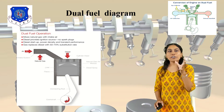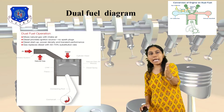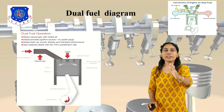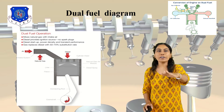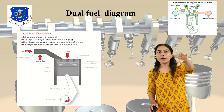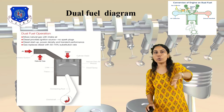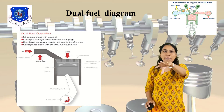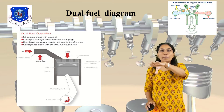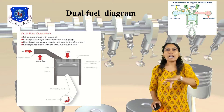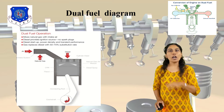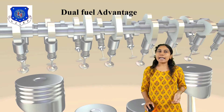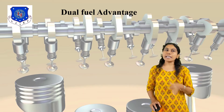You can see the diagram here: air, natural gas, and diesel enter the cylinder through the connecting rod to crankshaft — this is the process diagram of the dual fuel engine.